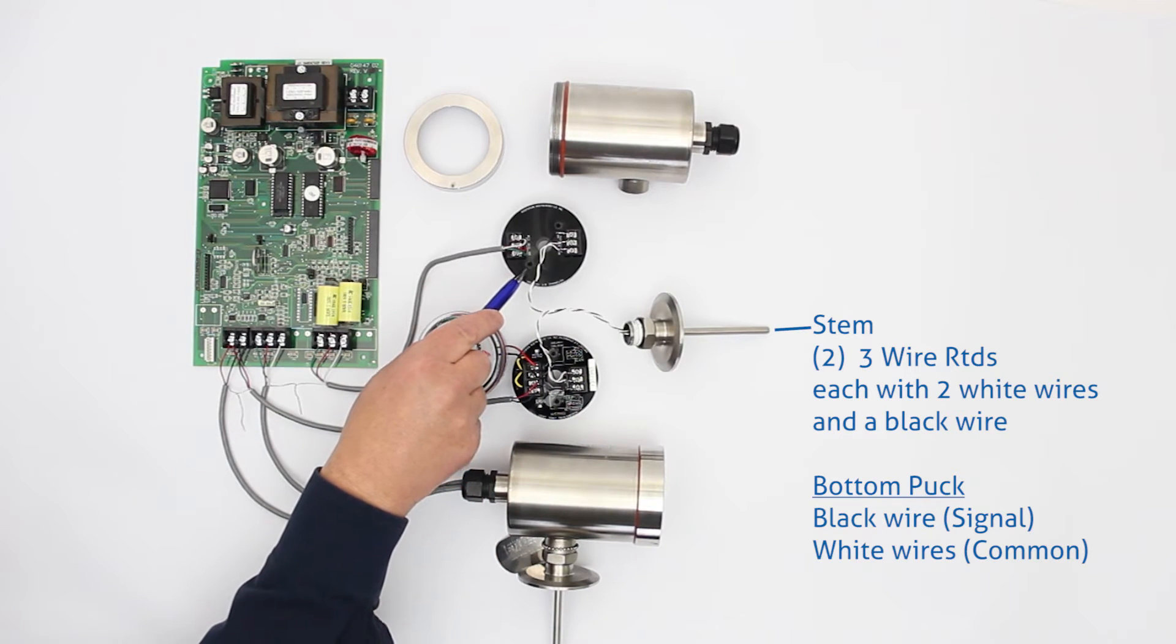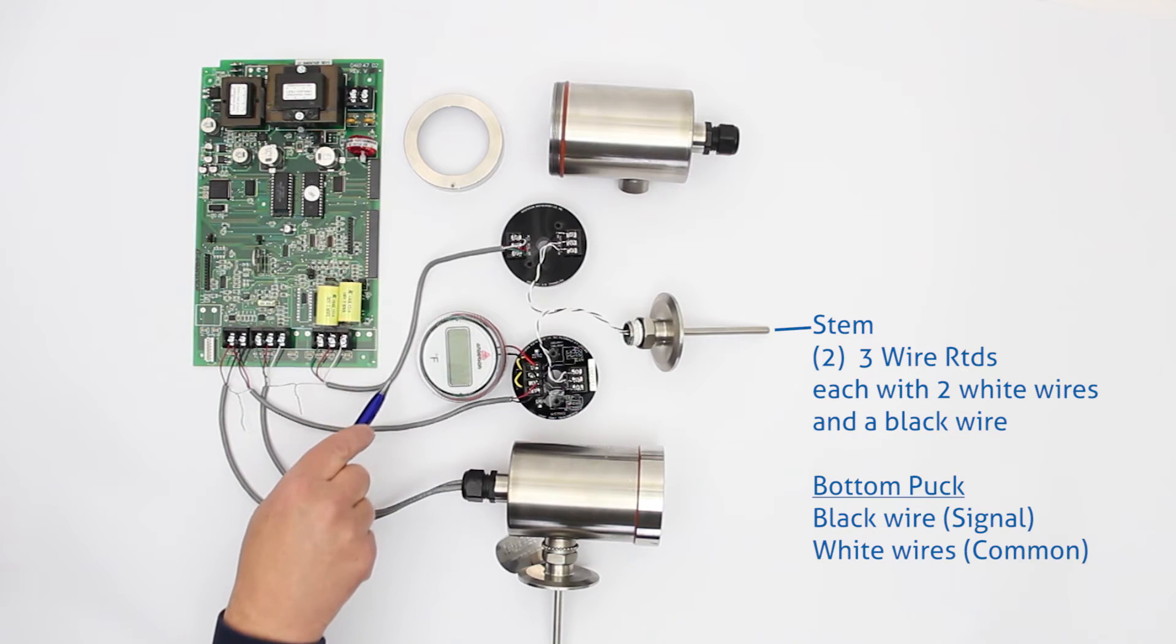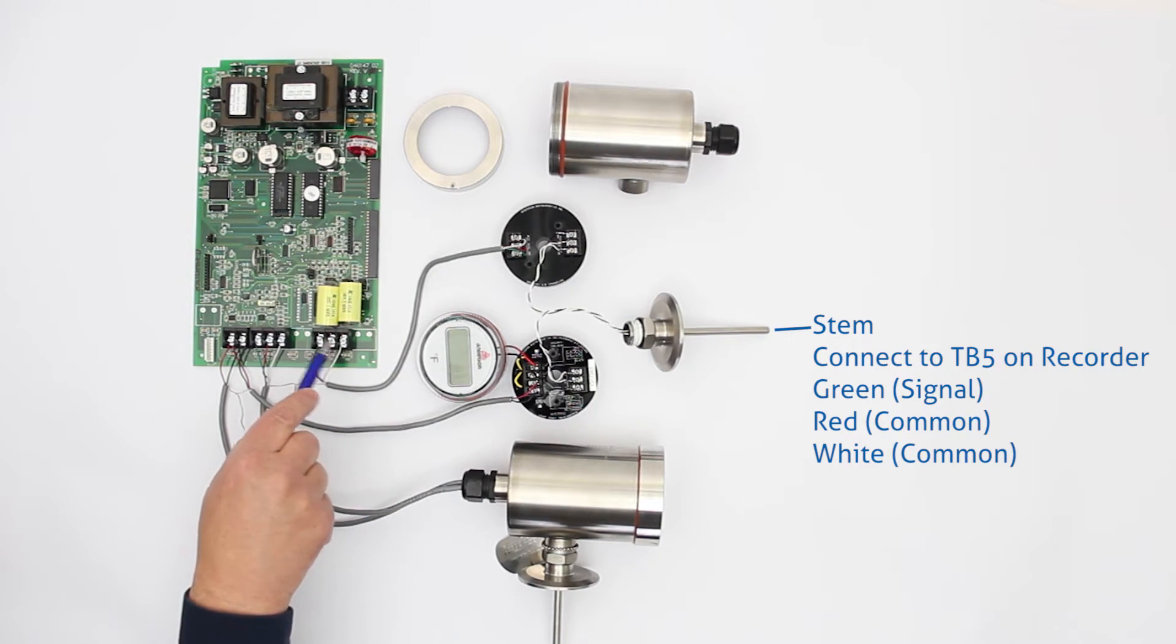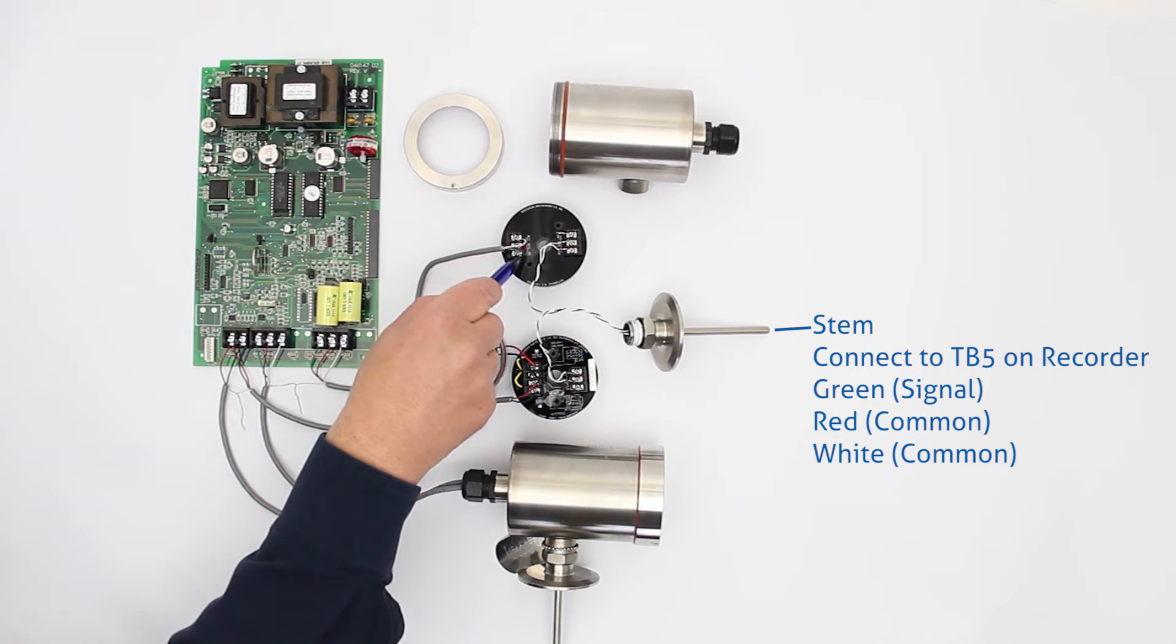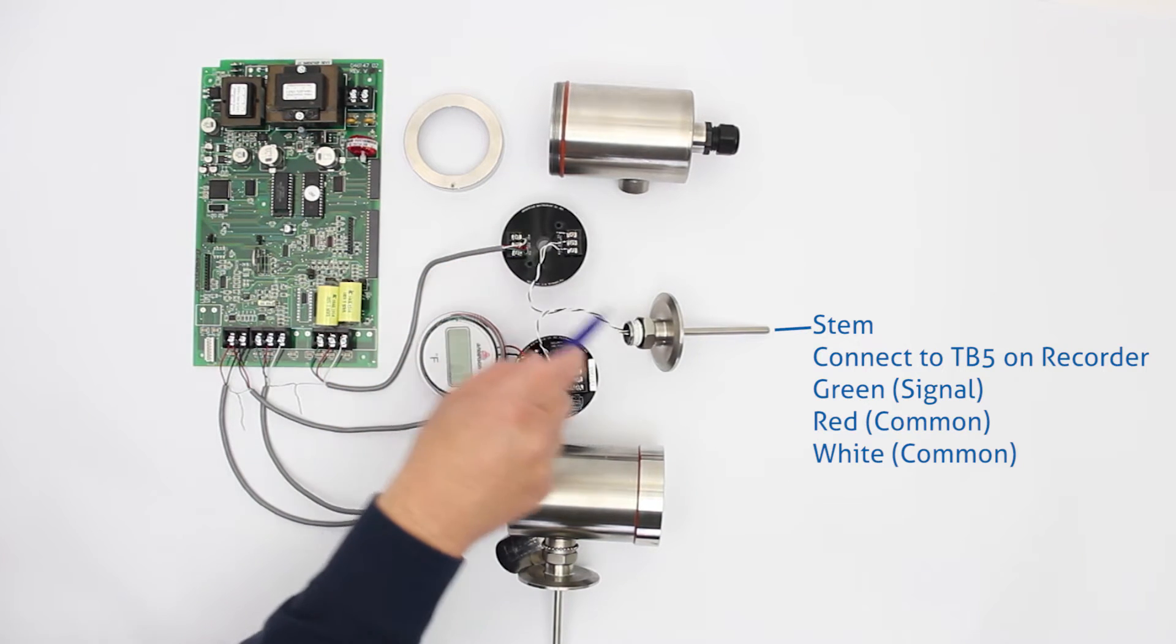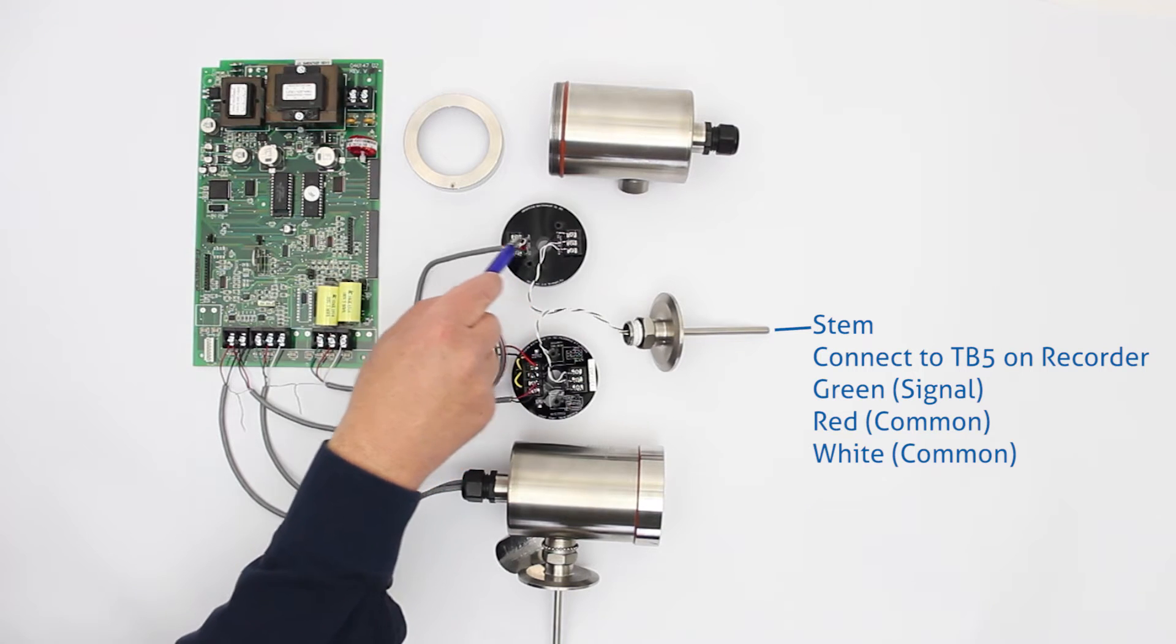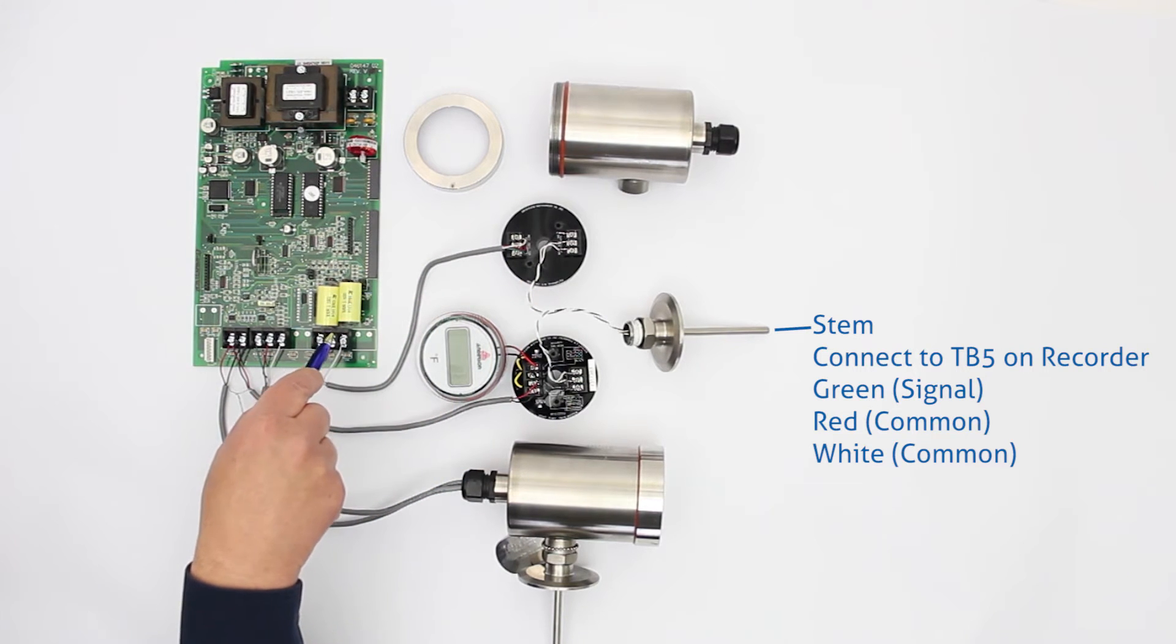One set of wires goes to the bottom puck and that will actually be connected up to the recorder and this one is coming into TB5. This is our airspace input block on the recorder and we have the green is the signal, the red is a common and the white is a common. So this RTD element comes up, goes to the bottom puck and is basically just fed straight through as an input signal coming into the AJ recorder.